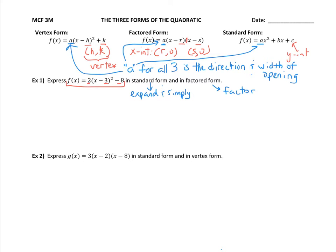So let me just pop some things into this document. Okay, so I just put the words vertex, x-intercept, and the fact that A is the same for all three and it represents your direction and width of opening. And what we're going to do is this example number one. We're going to take this function, which is written currently in its vertex form, and we're going to rewrite it in the standard form by expanding and simplifying.